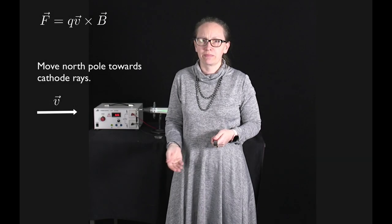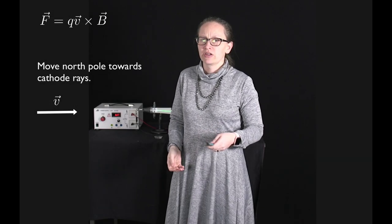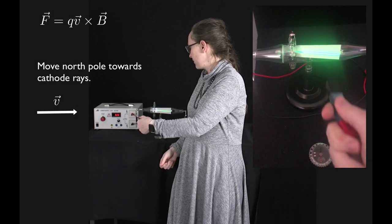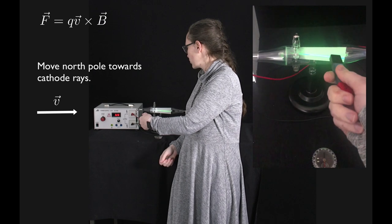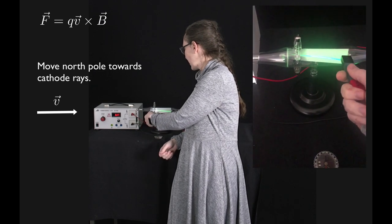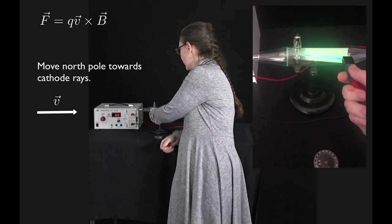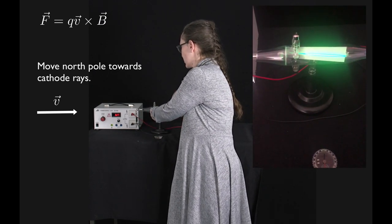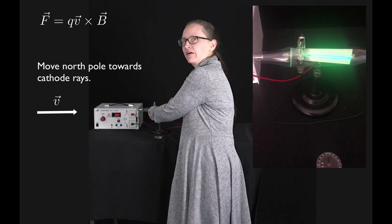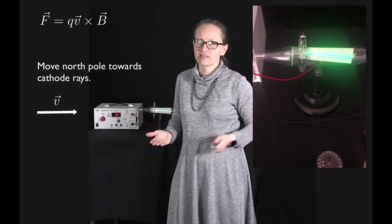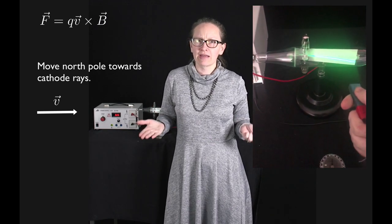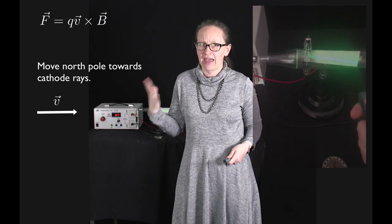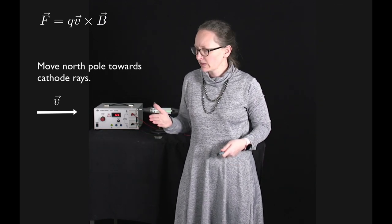Let's check your prediction now. You can see as I move the North Pole towards the cathode rays, they feel a downward force and move down like this. So how can we explain that with the right-hand rule?